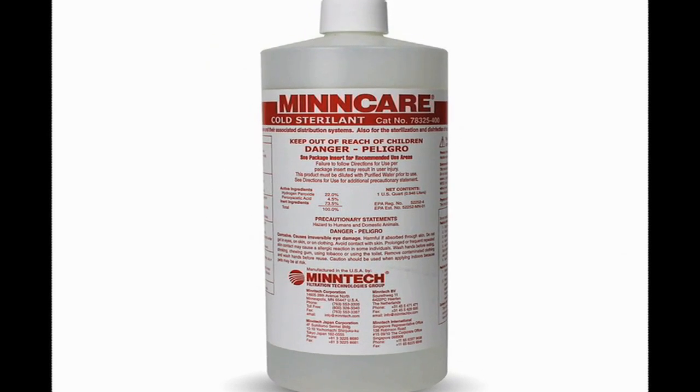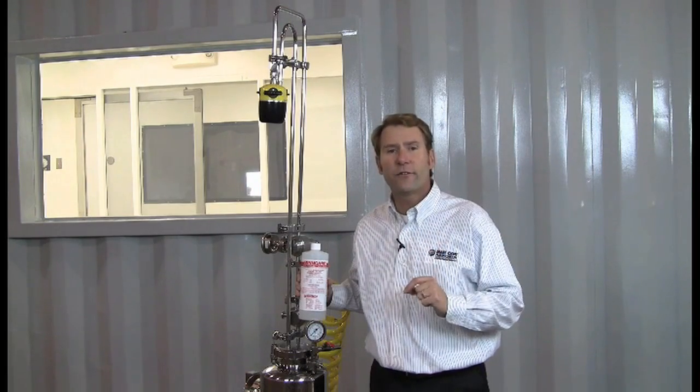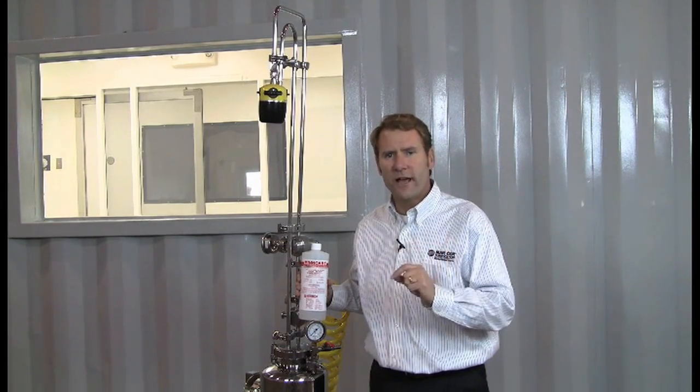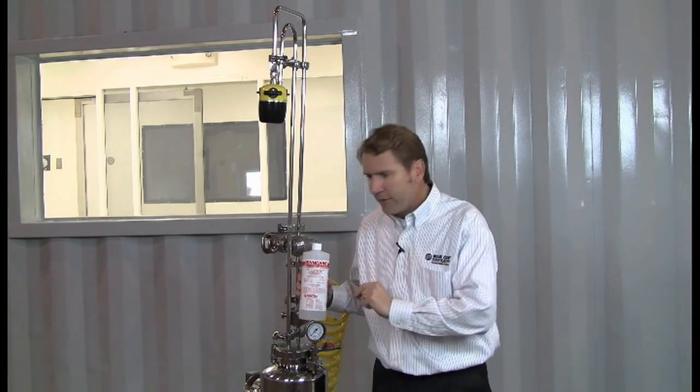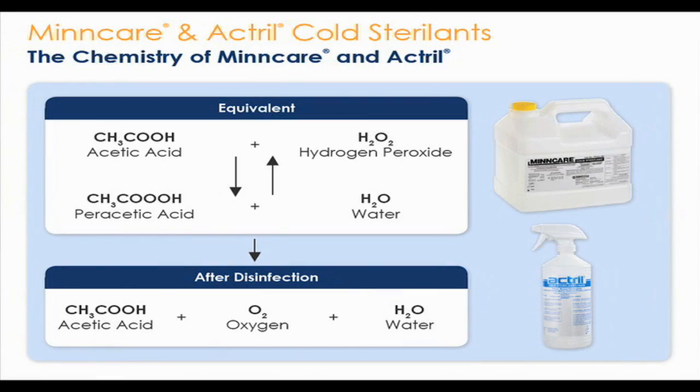MinCare is 22% hydrogen peroxide, 4.5% parasitic acid. It is a concentrated solution that you need to dilute down. When you're using it in the dry fog machine, dilute it down to between 3 and 10%. That percentage that you choose will help you in the log reduction of your microorganisms in your clean area.